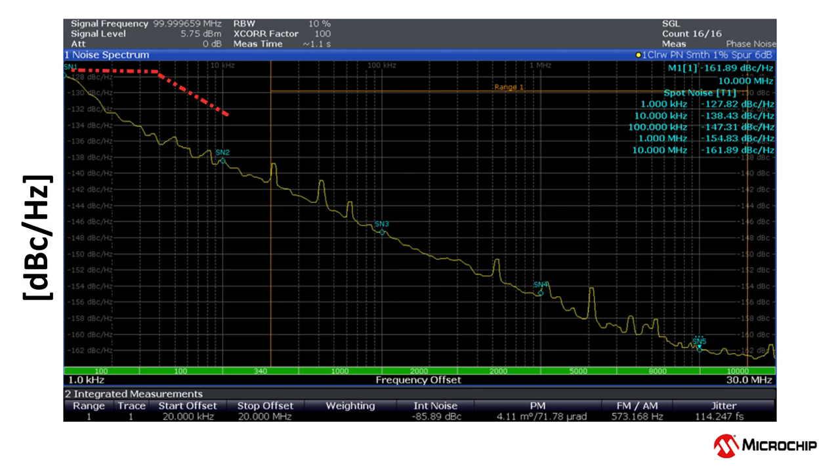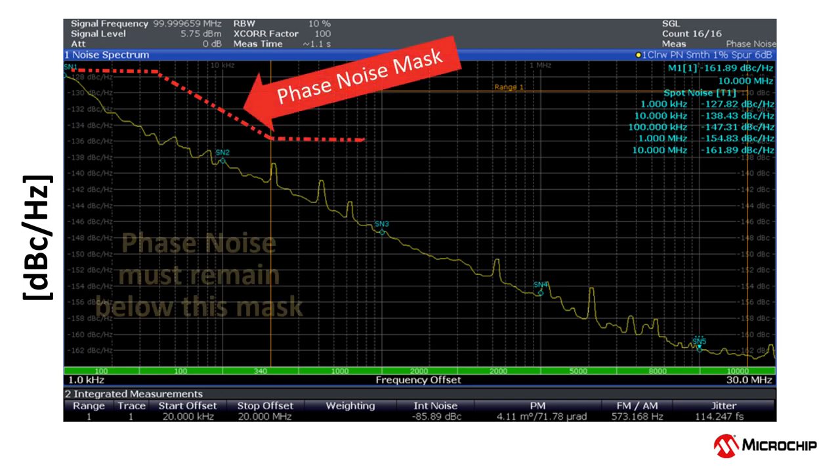This mask is a set of phase noise spectral density power levels that the device input clock must stay below. This phase noise mask is specified in the phase domain the way a phase noise analyzer would display it.